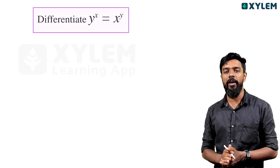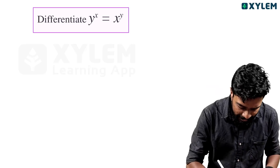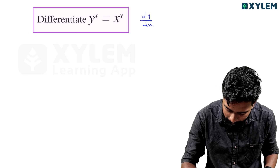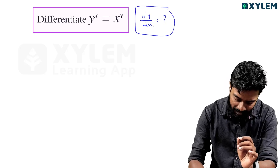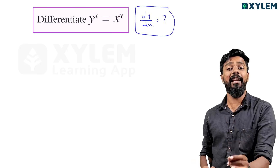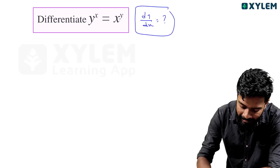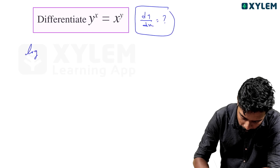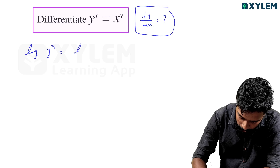Question 2: y raise to x equals x raise to y. Find dy by dx. Taking log on both sides, log y raise to x equals log x raise to y, which gives x log y equals y log x.